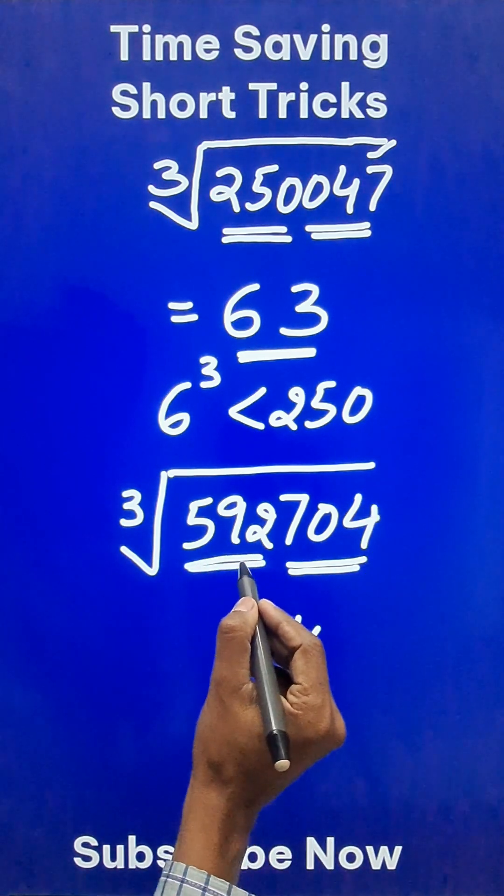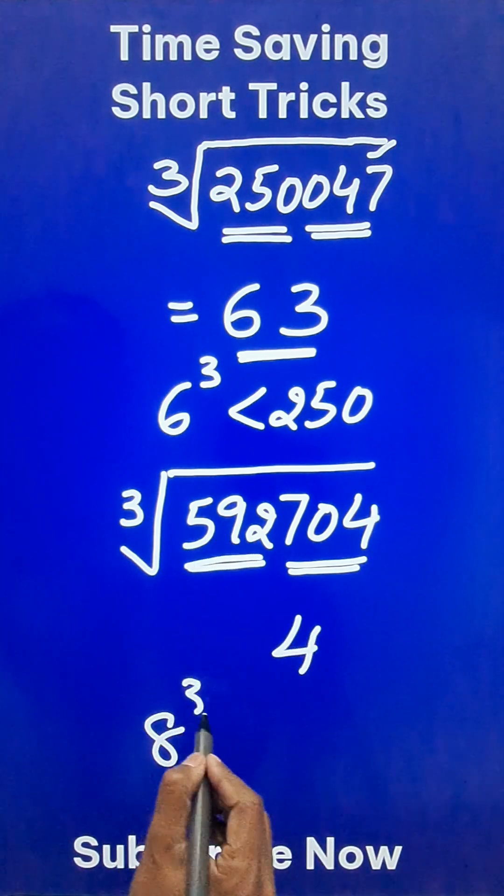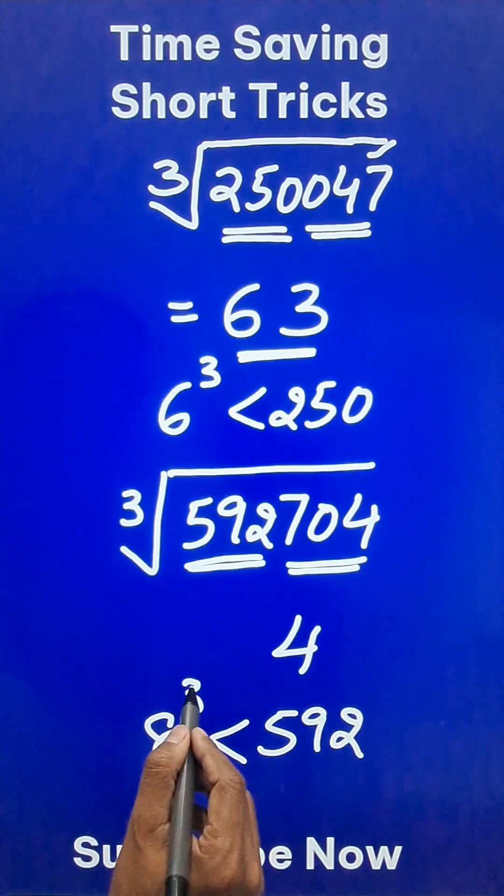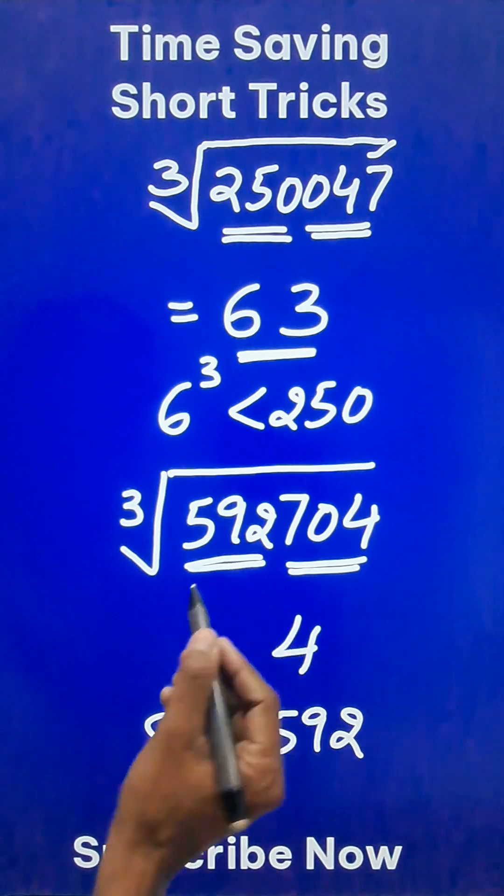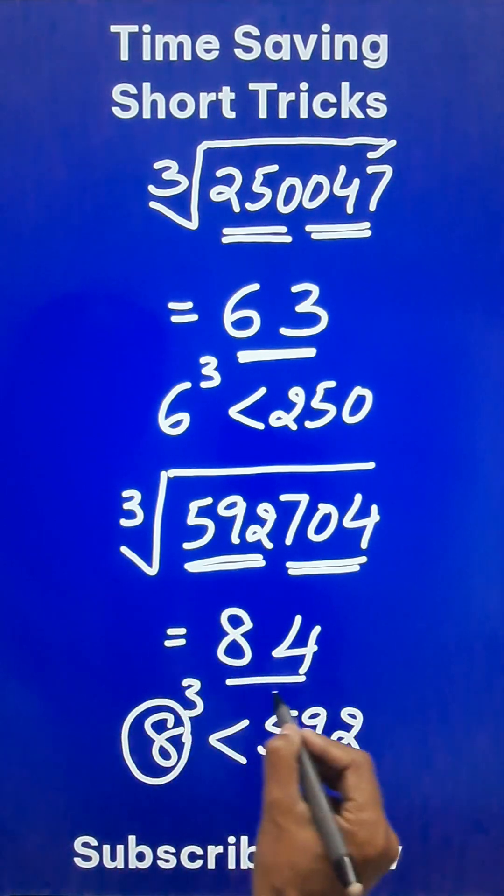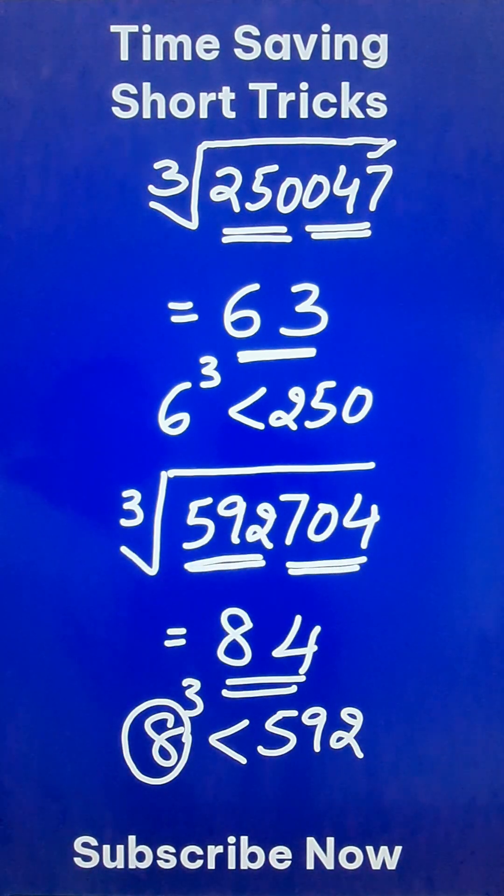Likewise, 5, 92. If you know 8 cube is 512 which is less than 5, 92 whereas 9 cube will be 7, 29 which is more than this. I don't want to go above this number. So I have to retain this number 8 in the answer thereby giving me 84 as the cube root of this big number.